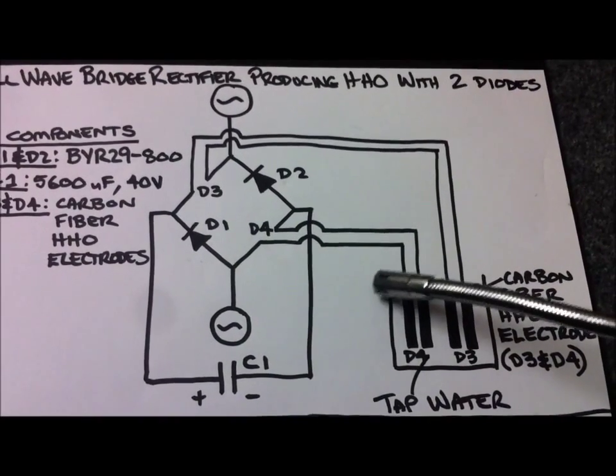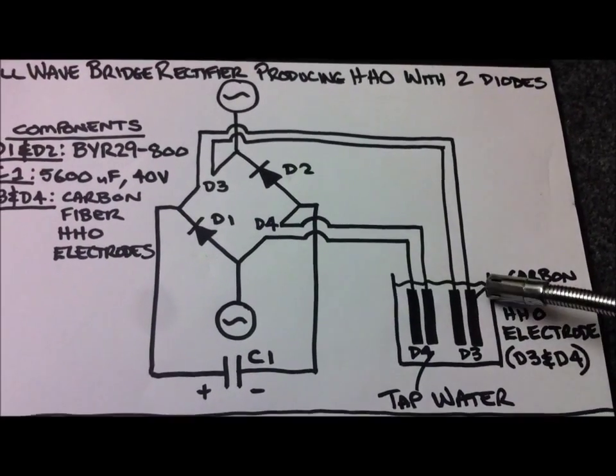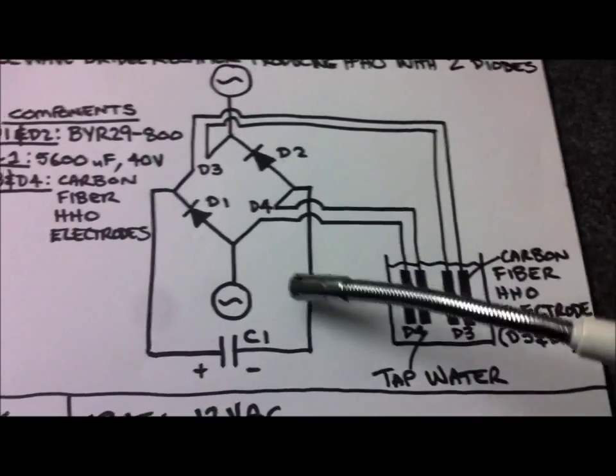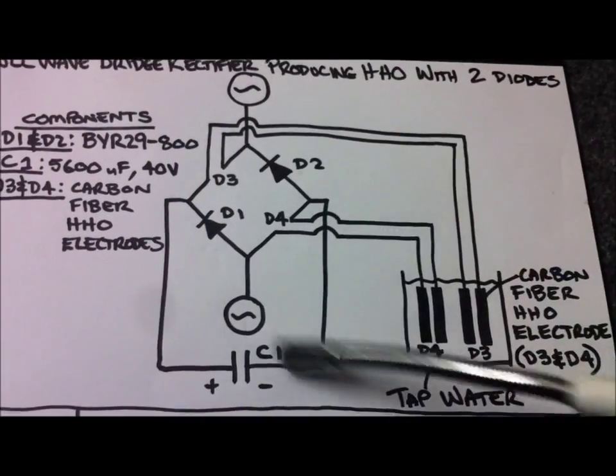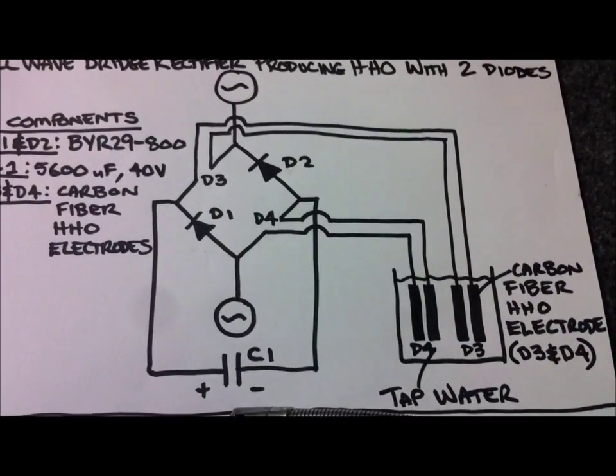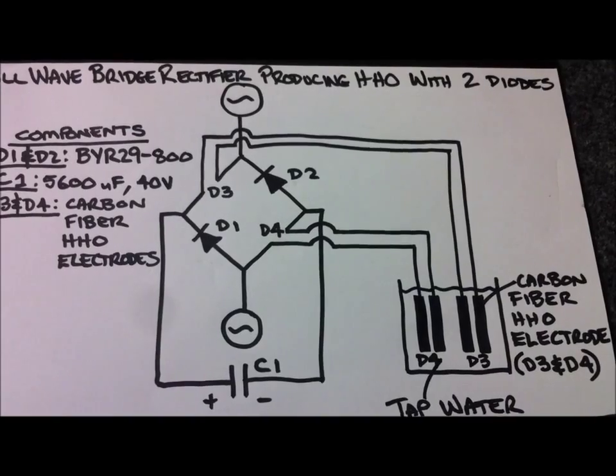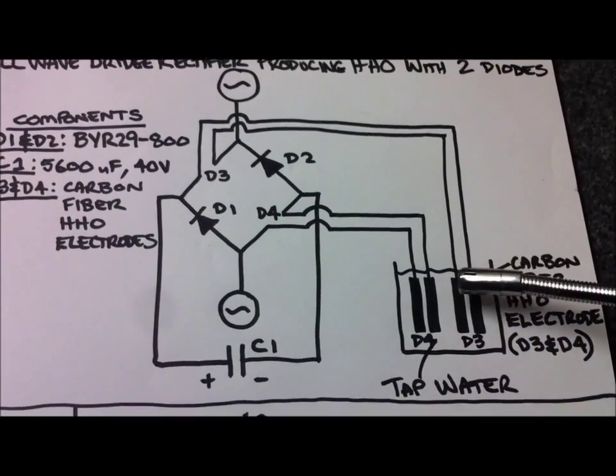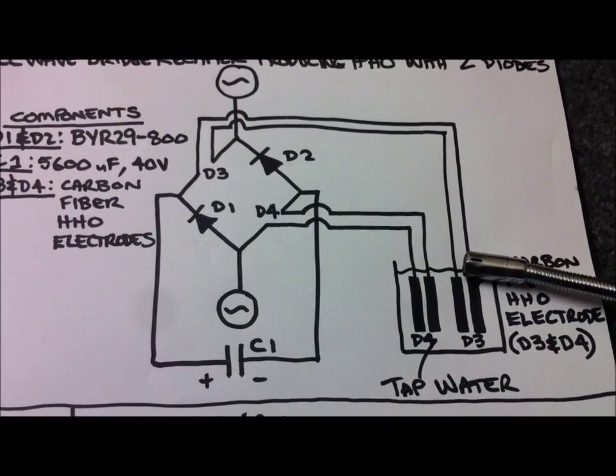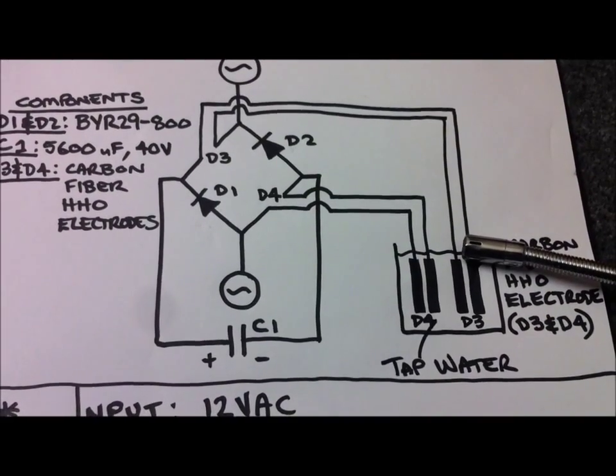After which all HHO production ceased. But somehow the current found its way through to actually power the load. So the load was still working but somehow the production of HHO had stopped. So I don't know how that worked but that didn't help us at all.